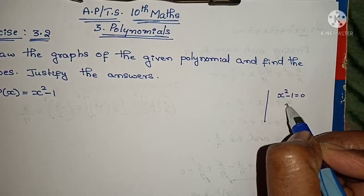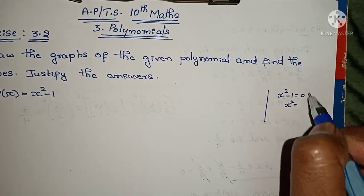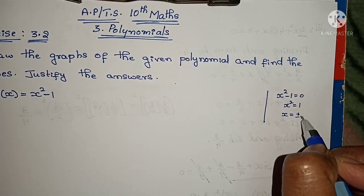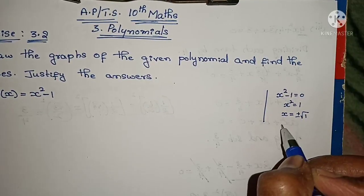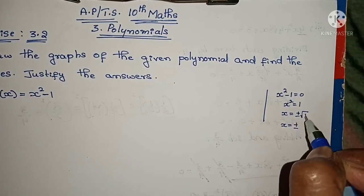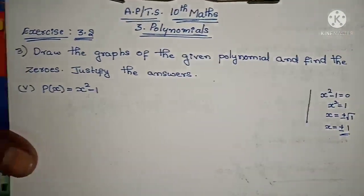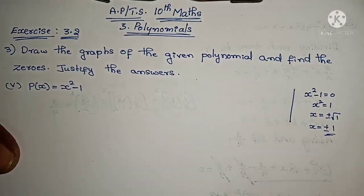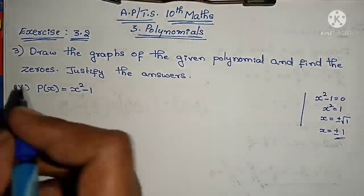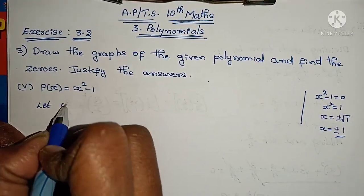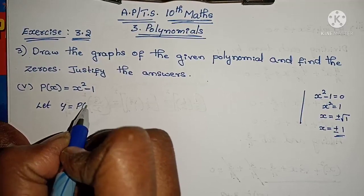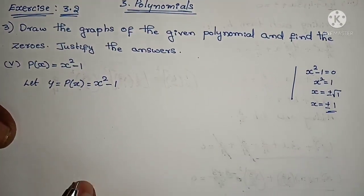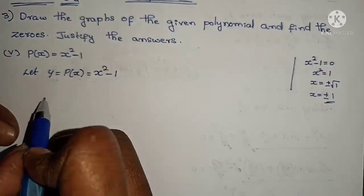x² minus 1 equals to 0. x² equals to 1, so x equals to plus or minus root 1. x equals to plus or minus 1. So the zeros of the polynomial are plus 1 and minus 1. Now let y equals to p(x) equals to x² minus 1. If we take values, we will plot the graph.